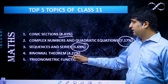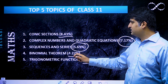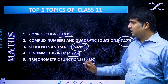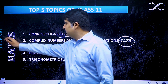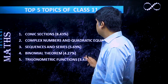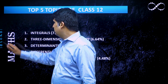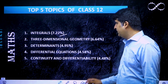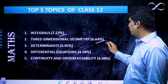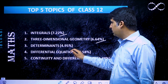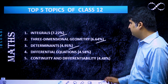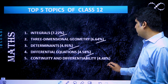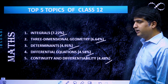After Conic Sections, algebra dominates — Complex Numbers, Sequences and Series, and Binomial Theorem are very important from Class 11. For Class 12, the top 5 topics are: Integrals at 7.22%, 3D Geometry at 6.64%, Determinants at 4.95%, Differential Equations at 4.58%, and Continuity and Differentiability at 4.48%.